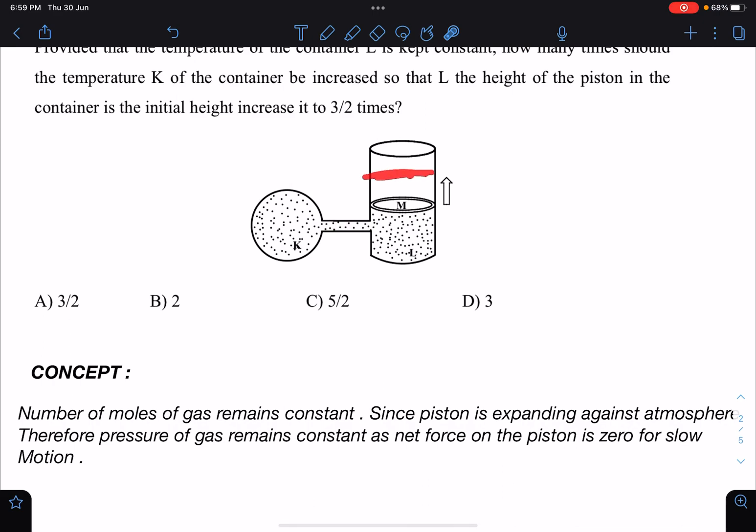Then P₀ plus mg is equal to P gas into A, which comes out to be a constant. That means pressure here remains P₀, and if here pressure is P₀ or P atmosphere, this pressure in the entire part remains P₀.